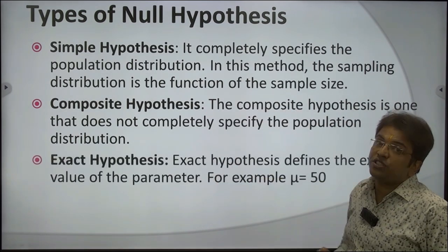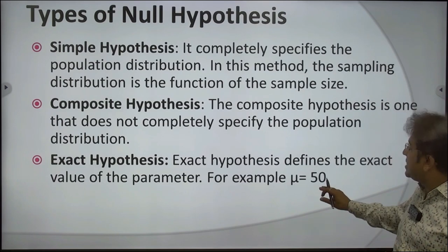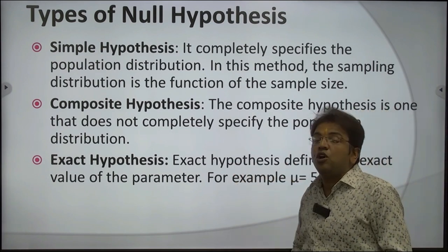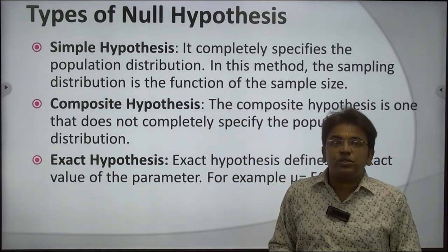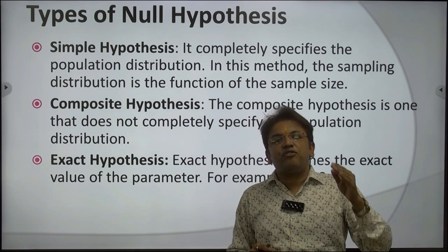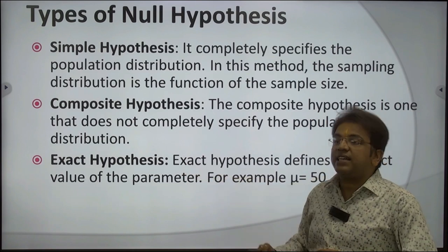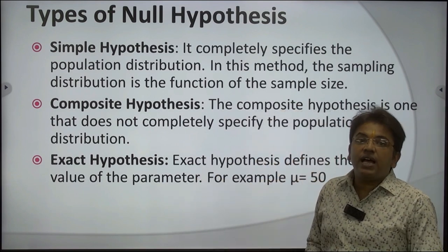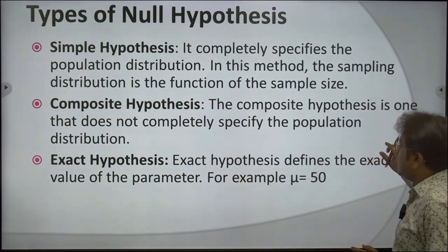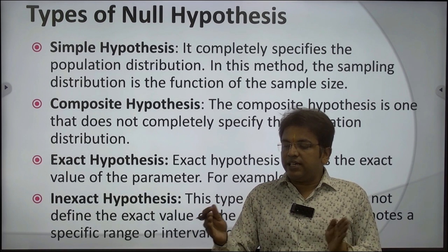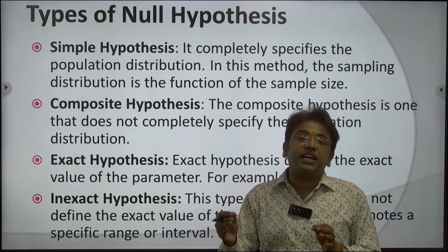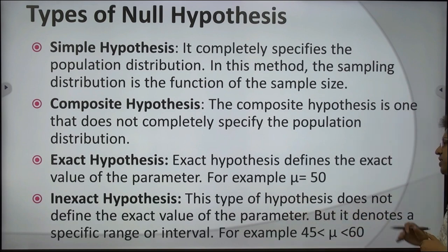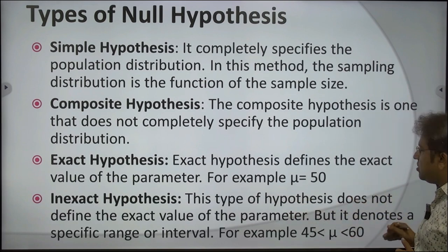Third is exact hypothesis. Whenever we frame a hypothesis with a certain specific value, it is an exact hypothesis. For example, mu equals 50. If we say all people of age 20 years are to be considered, that is an exact hypothesis because all people of that age group are considered for the sample. Fourth is inexact hypothesis — when data is put into class intervals and we say it will be more than or less than a value.